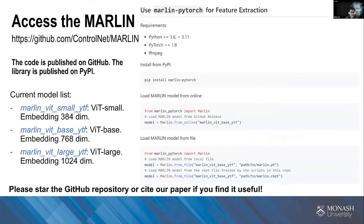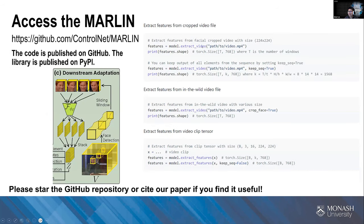The code is published on GitHub, and everyone can access and easily use the marlin-pytorch library for feature extraction. We currently have three models — ViT-Small, ViT-Base, and ViT-Large — all pre-trained on the YouTube Faces dataset as used in the paper. To use it: install the marlin-pytorch library from PyPI, then call model = marlin.from_online() to load the model, which downloads the checkpoint automatically. Then use model.extract_video() to get the features.